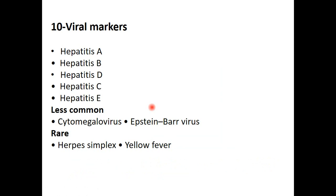An important test during investigation for patients with liver disease is viral markers. Hepatitis is one of the commonest causes of liver disease, and viral hepatitis is the commonest cause of hepatitis. To know what type of virus is involved, you send the patient for viral markers: HAV antibody (hepatitis A), HBsAg and HBs antibody (hepatitis B, also useful during vaccination), hepatitis D antibody, HCV antibody (hepatitis C, very important — commonly seen especially in post-transfusion hepatitis), HEV antibody (hepatitis E), and other viruses like CMV, EBV, herpes simplex, and yellow fever.